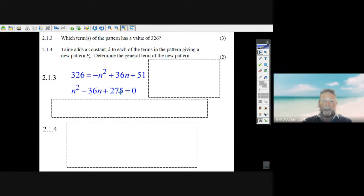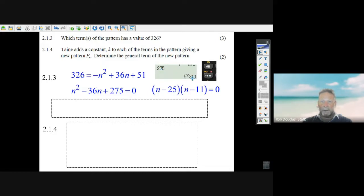You put in 275, press equals, and then press shift just below the square root sign. It'll turn it into 5 squared times 11. Well, there's your answer: 25 times 11, that gives you 275. And minus—they both have to be minus to make a plus—and minus 25, there's your answer. n equals 25 and n equals 11.